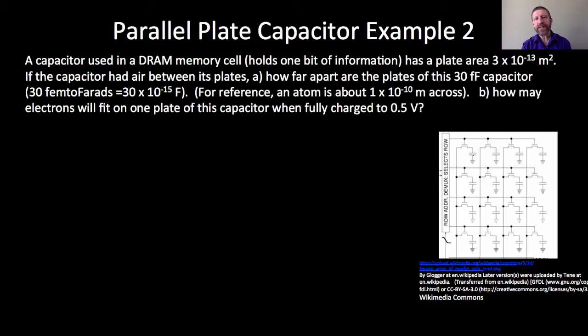And let's, if the capacitor had air between its plates, let's just assume that for now, how far apart are the plates of this 30 femtofarad capacitor? And we're going to, for reference, we're going to realize that an atom is about 1 times 10 to the negative 10 meters across. That's an angstrom, typical atom diameter. So let's go ahead and do that part first.